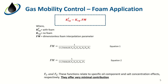F1 models the impact of surfactant concentration, F2 models the impact of the liquid phase, F3 models the impact of shear thinning, F4 models the impact of limiting capillary pressure, and F7 models the impact of water saturation or the foam dry-out effect. F5 and F6 are functions related to specific oil component and salt concentration effects. In many literature, these effects have offered very minimal contribution to the overall performance of foam. Now that we have a background overview of foam, let's delve into CMG STARS to see how this model can be set up. See you in the practice section.